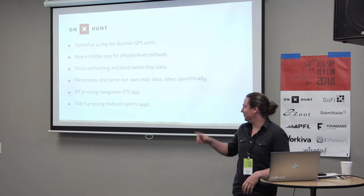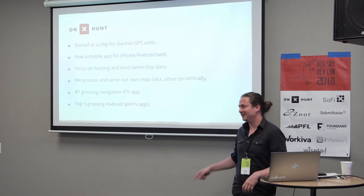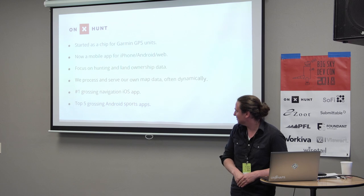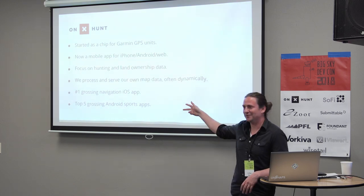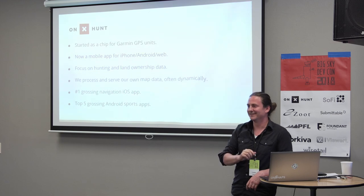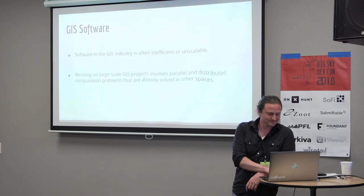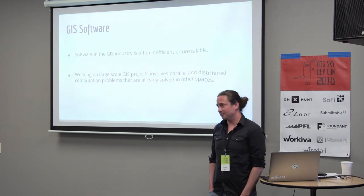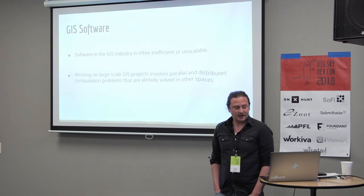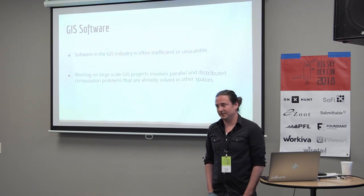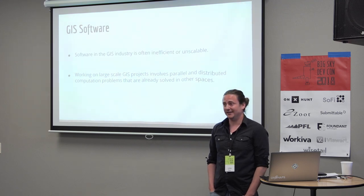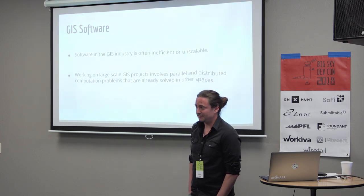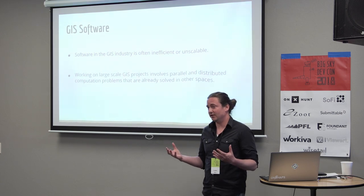We're number one grossed in navigation apps on iOS and top five grossed in Android sports apps. Here's my thesis statement: after spending the last couple of years working with GIS software, I've begun to feel that a lot of the GIS software industry is based on software that's inefficient and not scalable. We're dealing with a lot of low-level problems that other industries have kind of solved, but for some reason the GIS world hasn't.